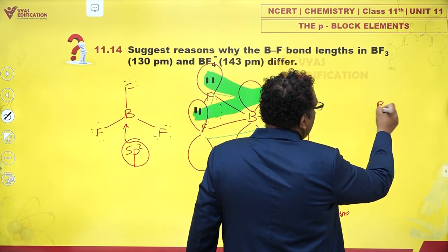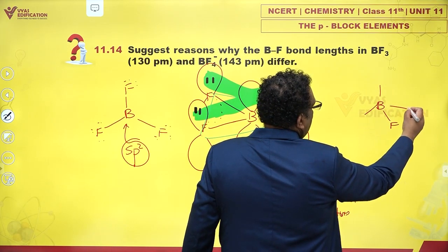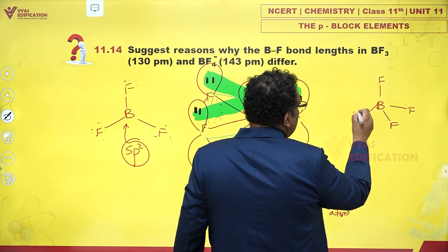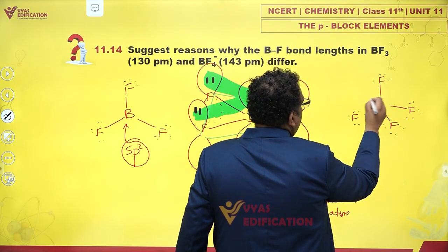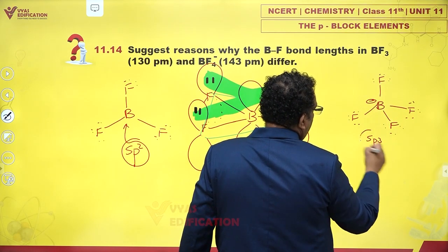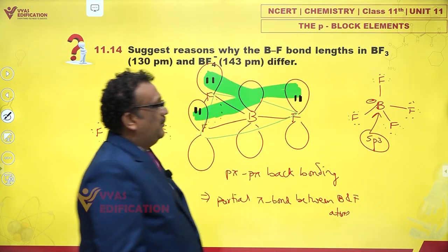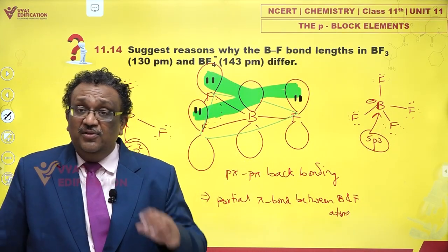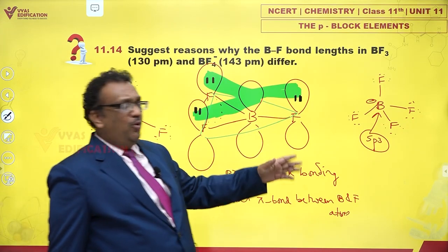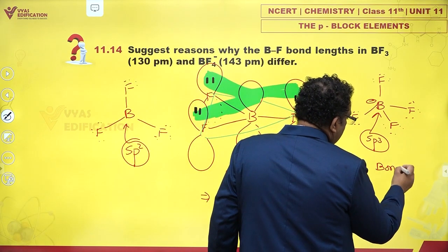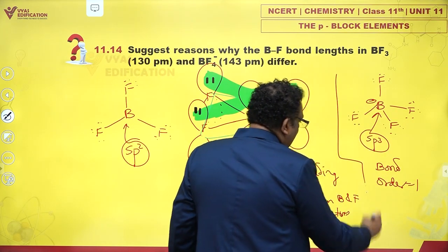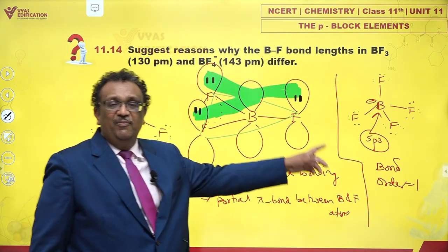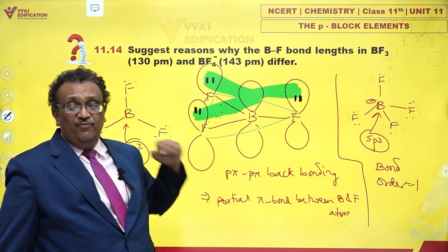In case of BF₄⁻, please note that the hybridization is SP3. Hybridization of boron is SP3. There is no backbonding, there is no pi bond. Bond order is purely one. There is only strictly a single bond between boron and fluorine, which has a length 143.